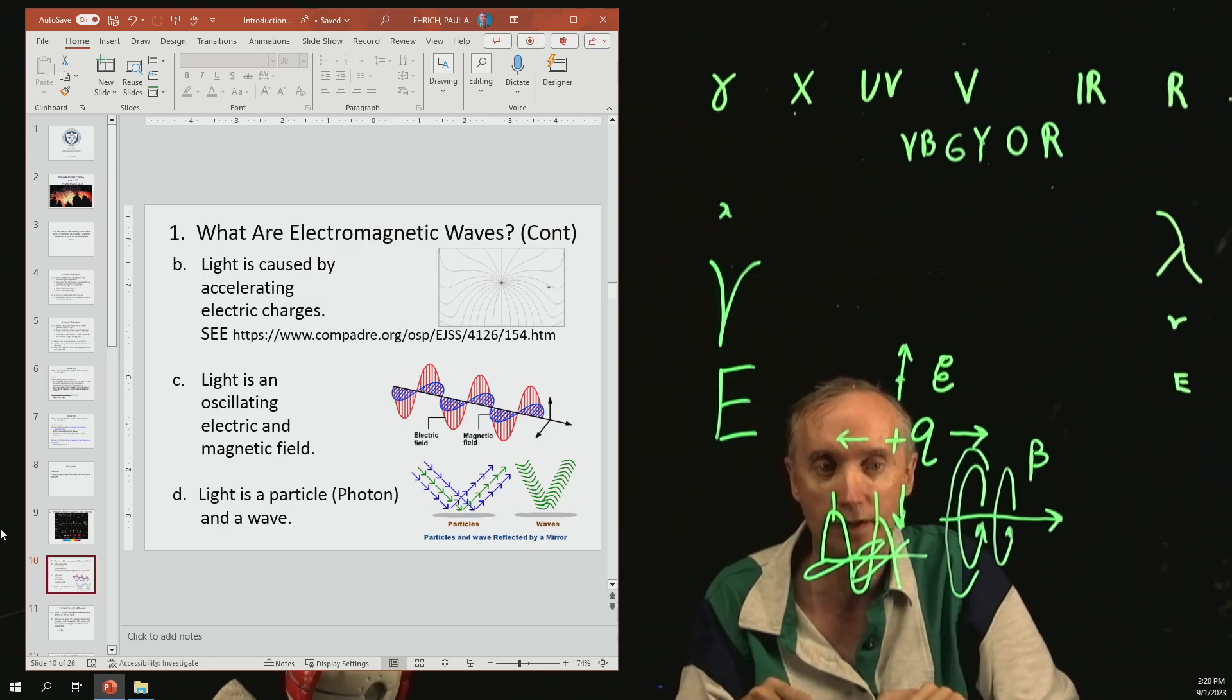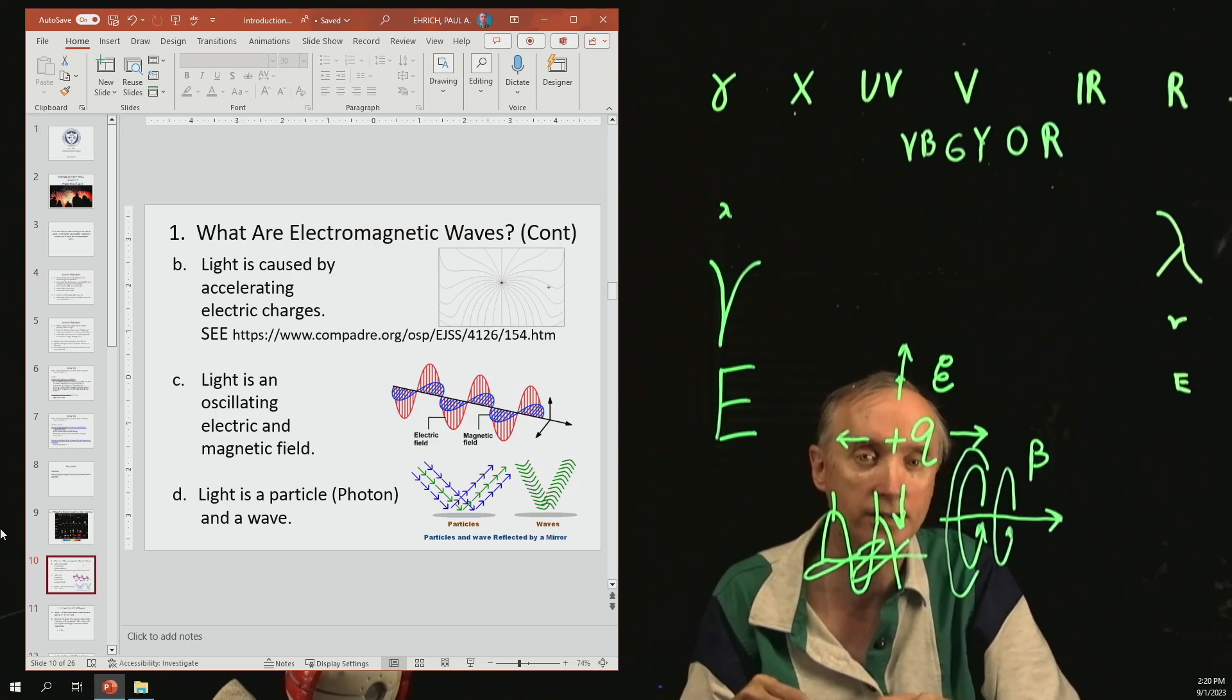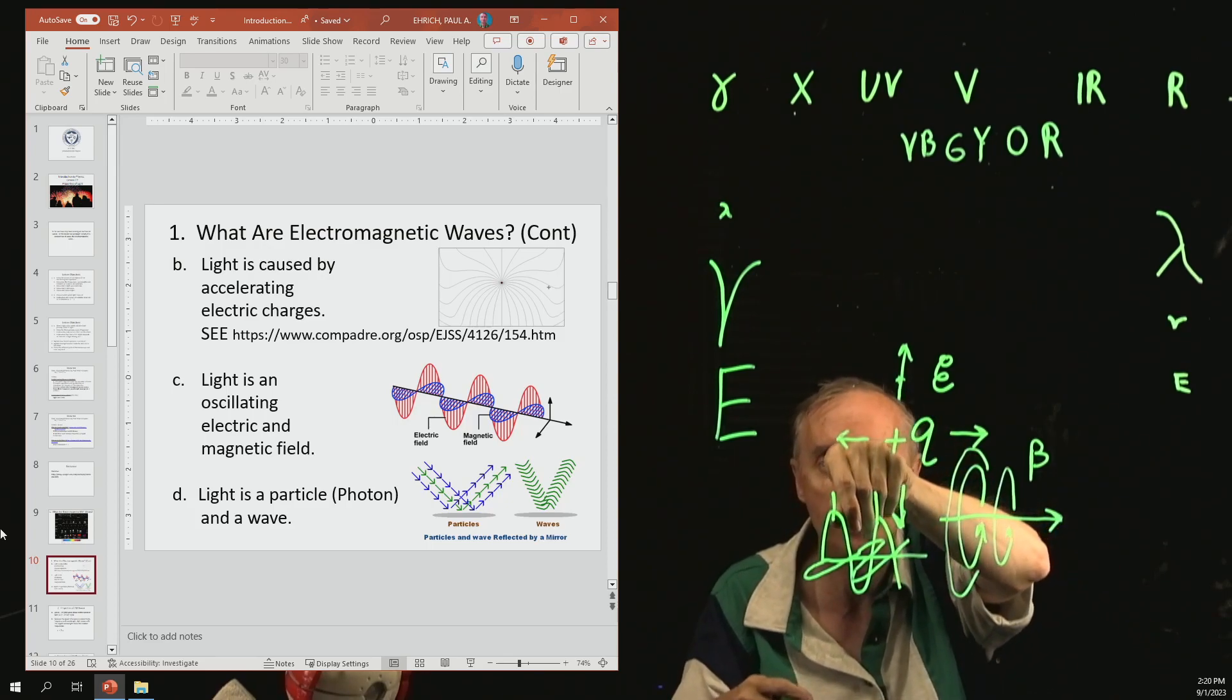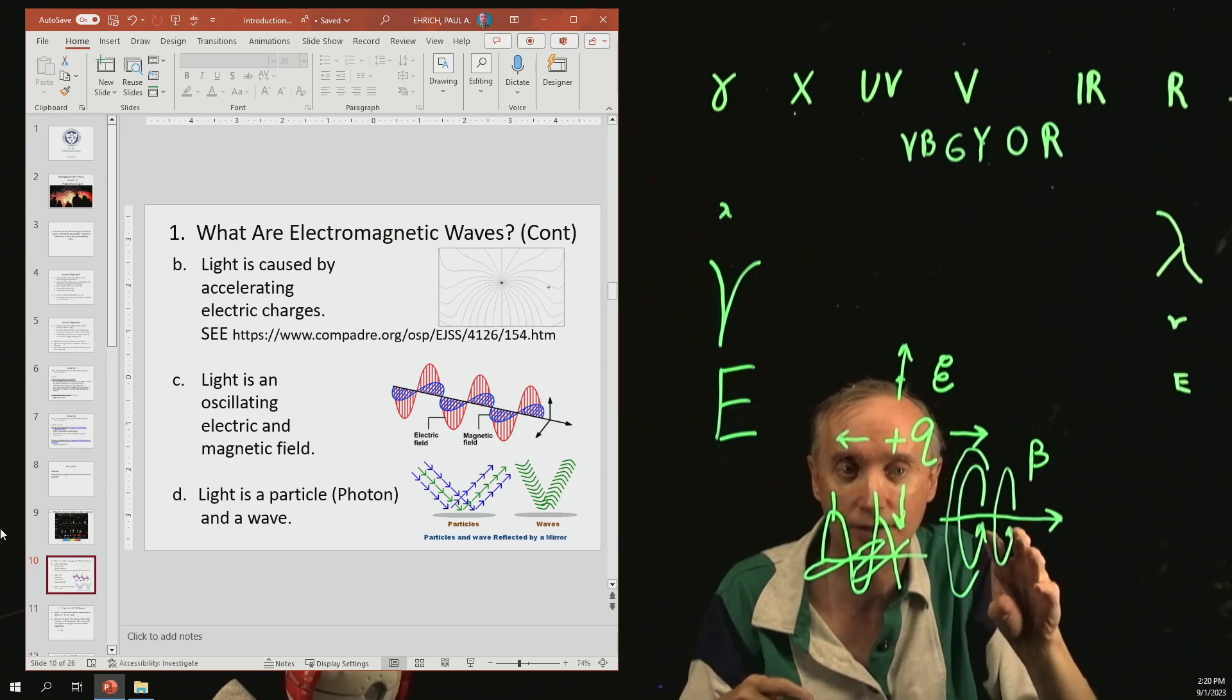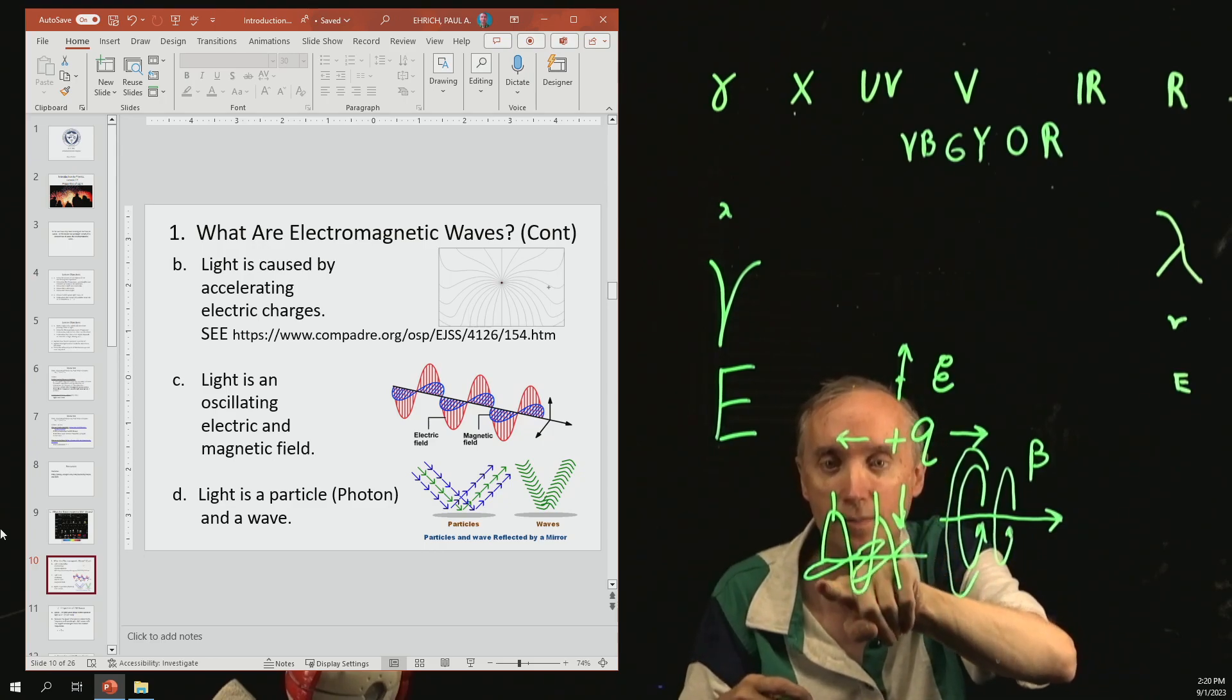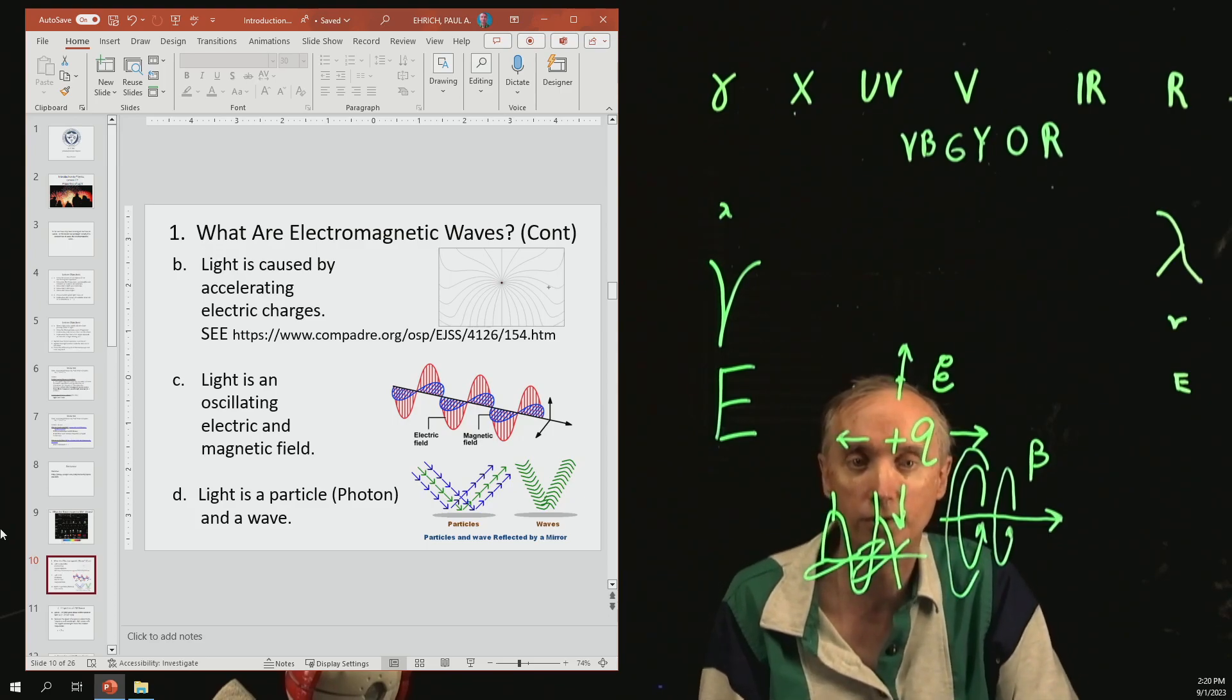Now, what would happen if you reached in and pulled out the electric field part? The light would go away. Light cannot exist without both the electric and the magnetic fields. They both have to be there in order to be able to generate light.